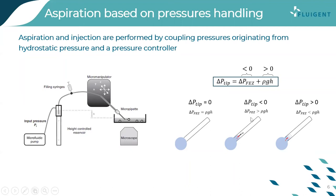By playing with negative and positive pressure, we can determine when we have zero pressure at the tip of the micropipette — this is when the negative pressure of the controller equals the hydrostatic pressure due to the height difference. If the negative pressure of the controller is higher than the hydrostatic pressure, we can aspirate; the opposite effect occurs when the hydrostatic pressure is higher than the controller pressure.